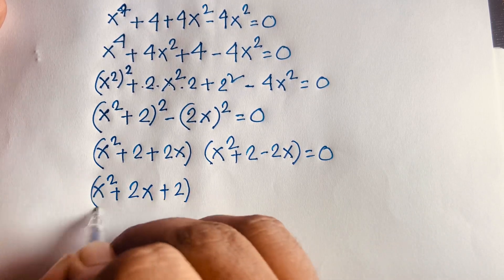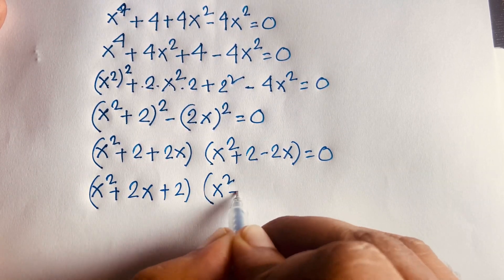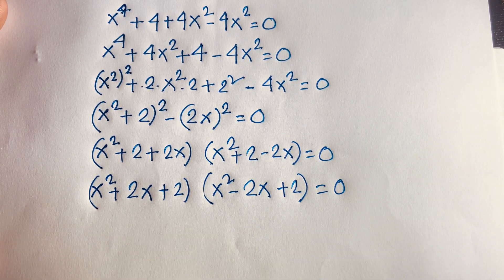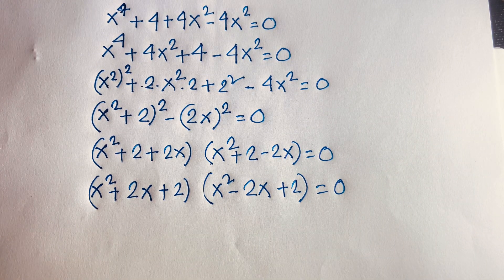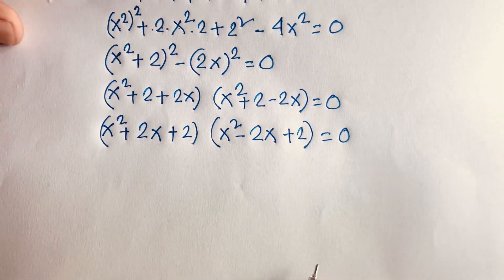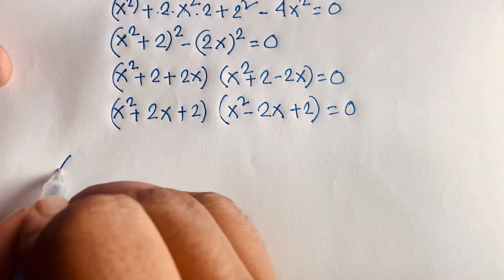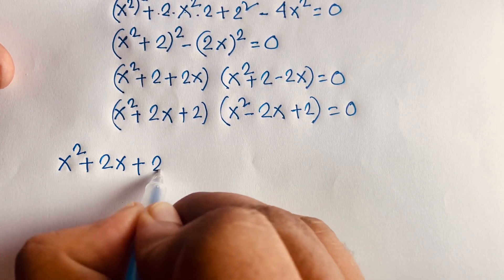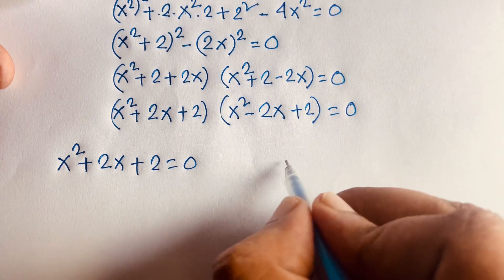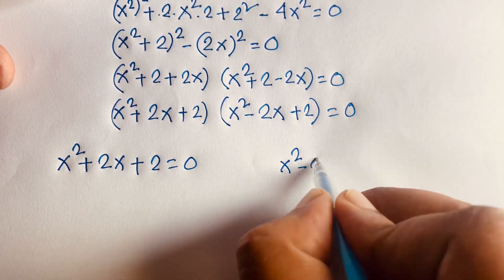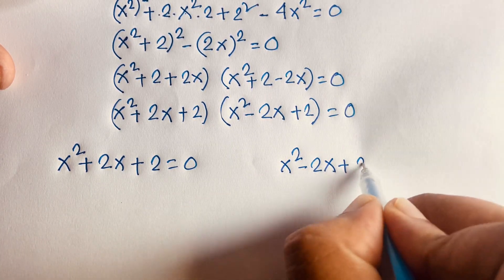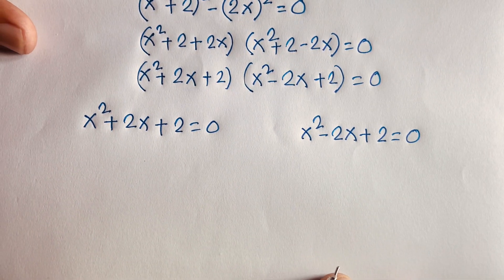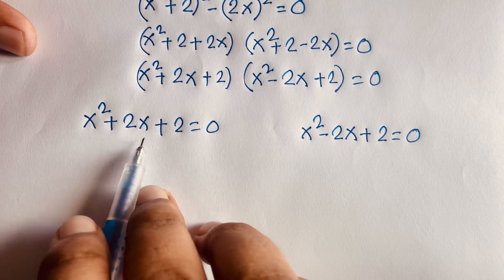This gives us two cases. Case 1: x² + 2x + 2 = 0. Case 2: x² - 2x + 2 = 0. We now find the value of x in each quadratic equation.